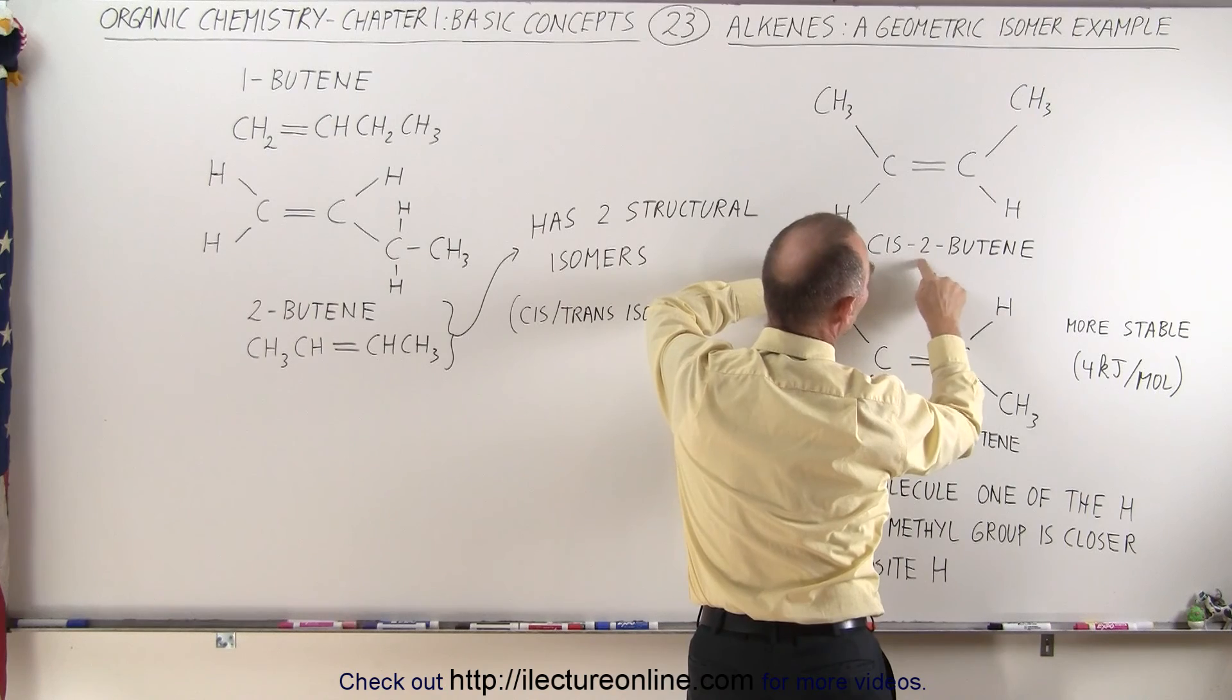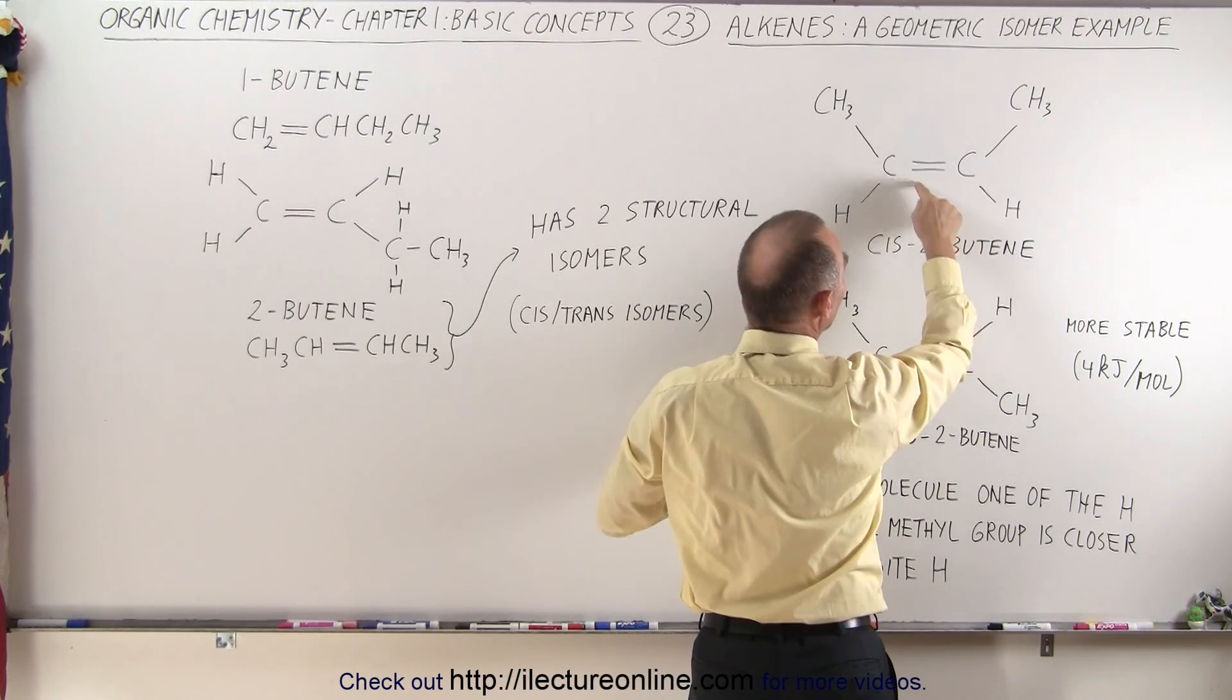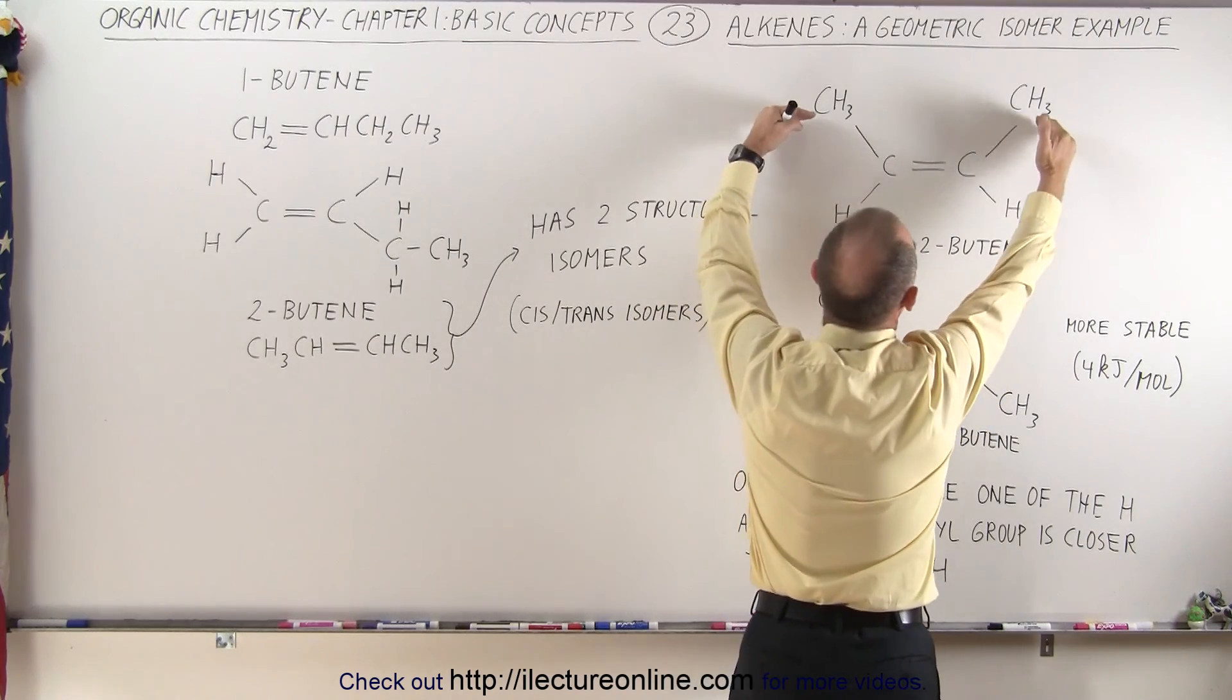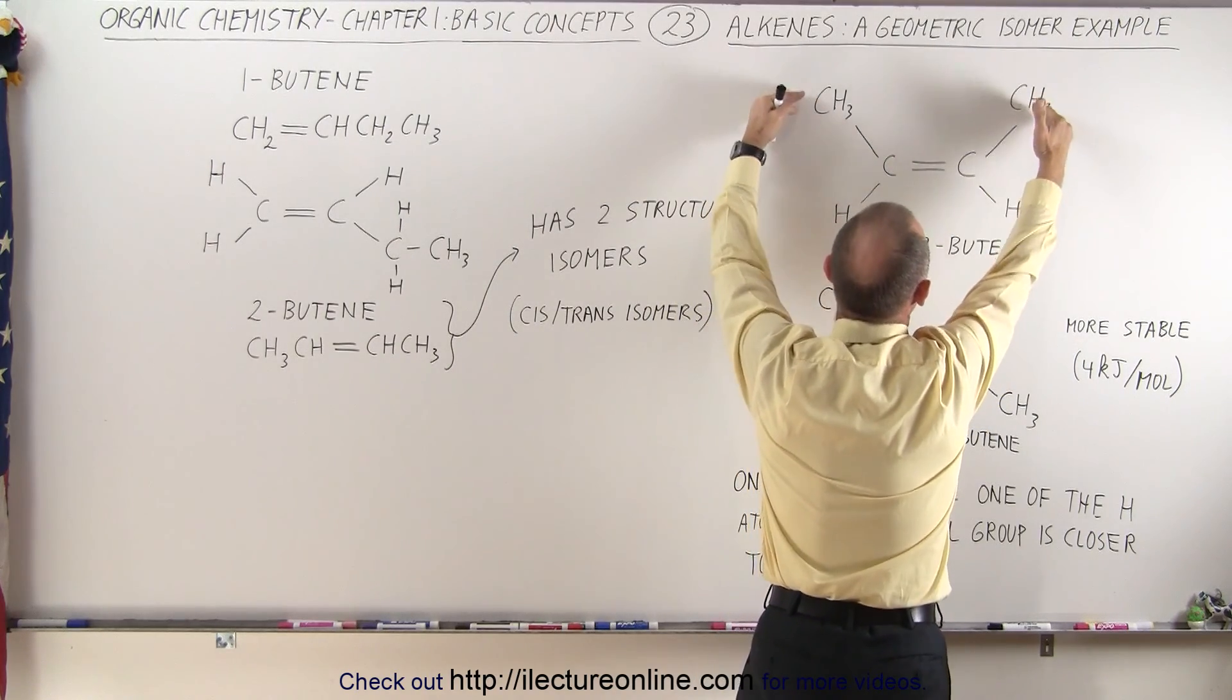So this we call cis-2-butene. The two indicates the double bond is the second bond in the chain, and the cis means that both of the methyl groups are on the same side of the molecule.